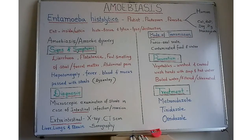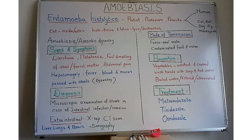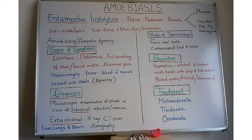Today's topic is amoebiasis and the causative agent is Entamoeba histolytica. It is a protist, or we can also call it a protozoan or parasite. The word 'protist' means it is a eukaryotic organism that is not an animal, plant, or fungus. 'Protozoan' means it is a single-celled microscopic animal, considered to be the sub-kingdom of kingdom Protista, or we can call it a parasite as it resides in the intestine of humans.